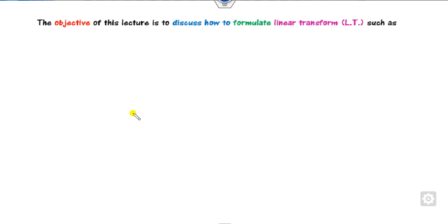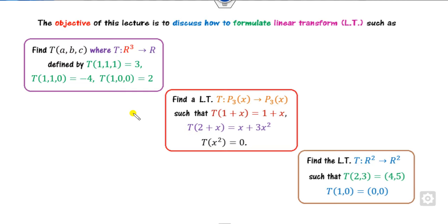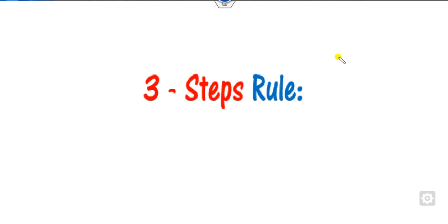The objective of this lecture is to see how you can formulate linear transformations given some transformation mappings involving polynomials and many more. How you can formulate the linear transformation like this. We will describe the three-step rule, which is very simple.